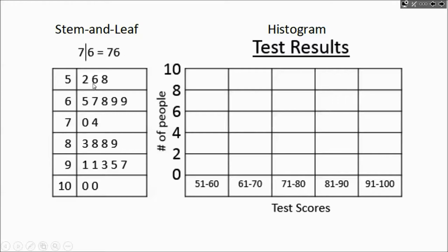This number right here, this 7 down here, is representing 97. So the tens places are over here in the stem and the leaves are the ones digits. This 4 right here is representing 74.